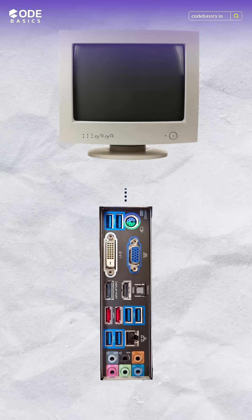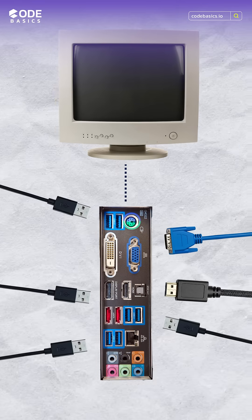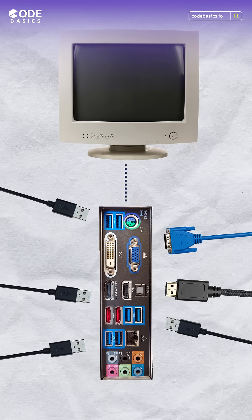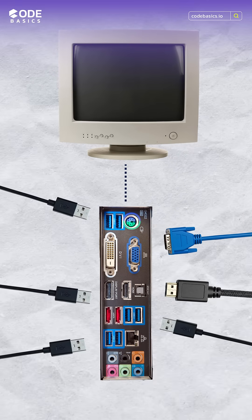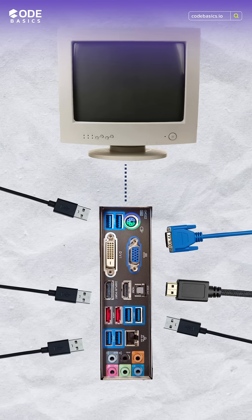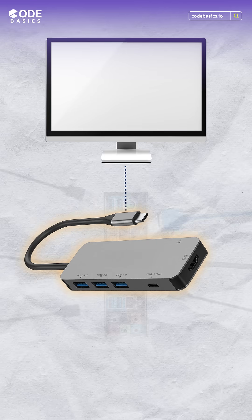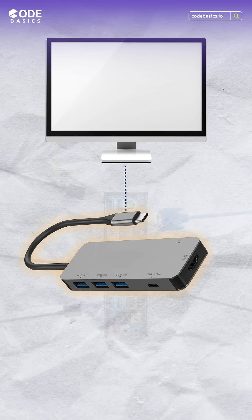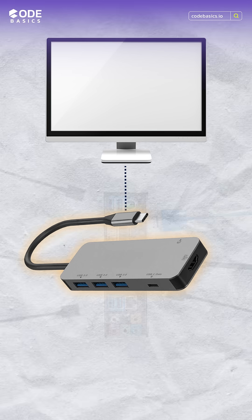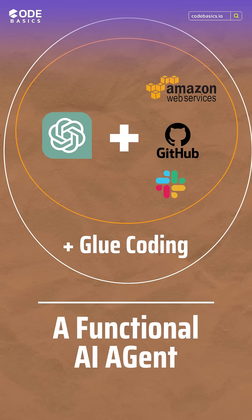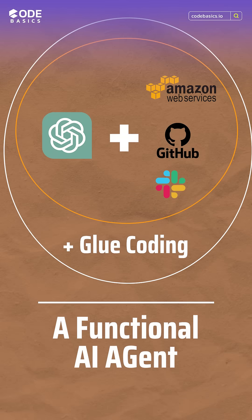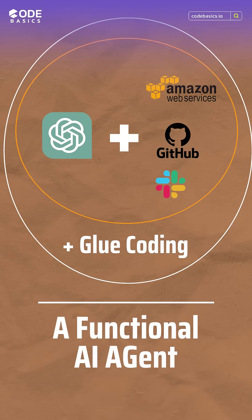To give you an analogy, previously to connect different devices to your computer, you had to use a variety of cables and ports. But now with USB-C, you can connect all those devices to your computer through a single unified interface. Similarly, previously to build an agent, you needed to write a lot of glue code between LLM and tools.